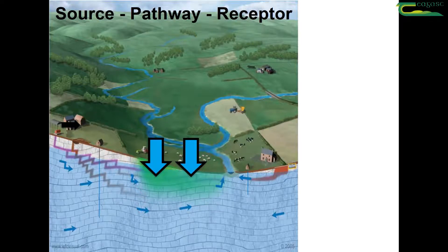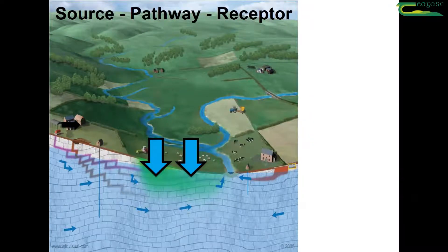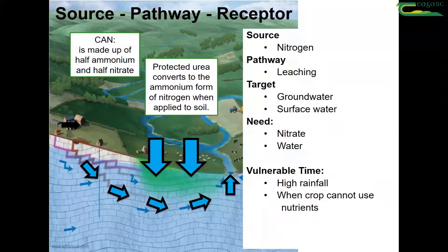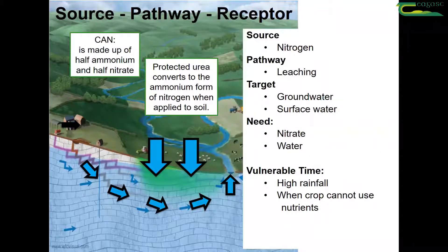Here's an agricultural landscape. The two blue arrows in the middle are indicating the leach pathway, so it's a vertical pathway through the ground surface. The source here is nitrogen, and the pathway is a vertical leaching pathway where nutrients are lost through the soil and head towards groundwater.